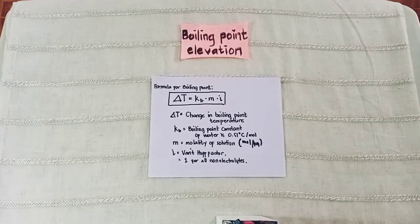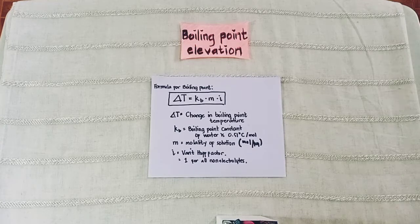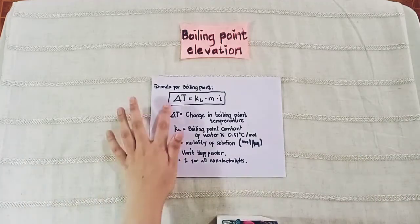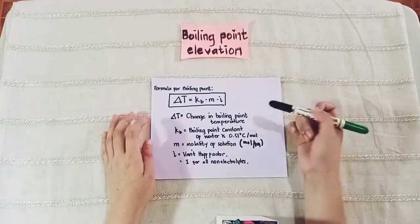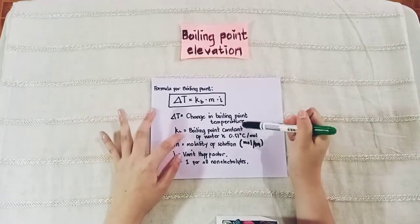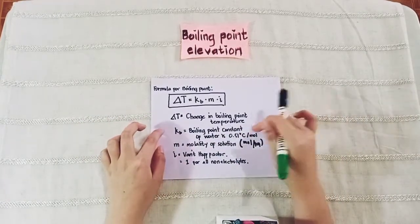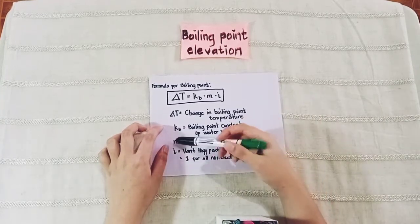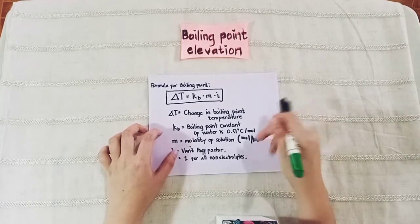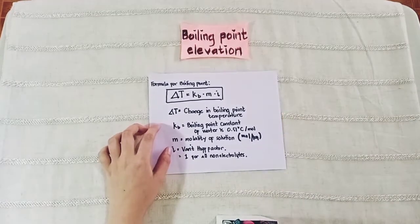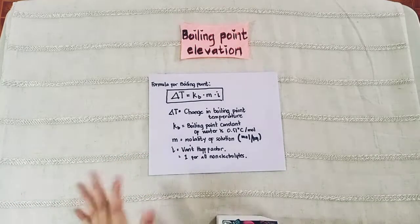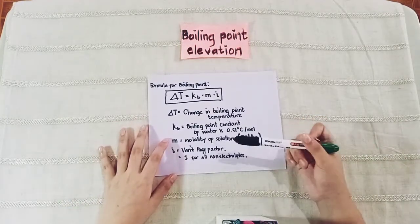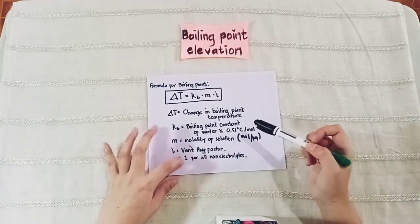Now let's move to boiling point elevation. It is considered a colligative property. The formula is delta T equals KB times M times i, where delta T is the change in boiling point temperature, KB is the boiling point constant of water which is 0.51 degrees Celsius per molal, M is the molality of the solution in mole per kilogram, and i is the van't Hoff factor, representing how many particles the solute breaks into in solution. For all non-electrolytes or weak electrolytes, i equals 1.